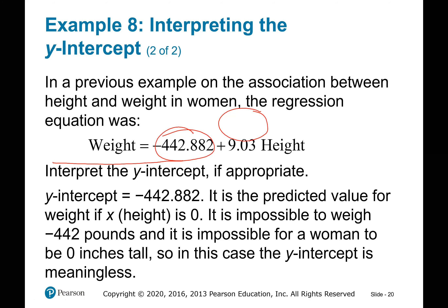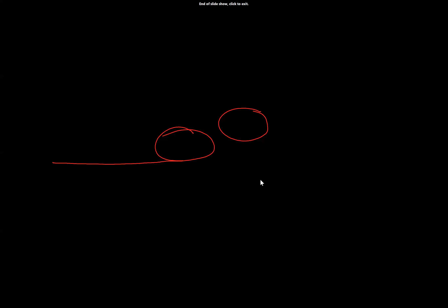For the height and weight regression equation, the y-intercept is −442.882. This would be the predicted weight if height is zero inches, but that is impossible — a person cannot weigh a negative amount, and a woman cannot be zero inches tall. So in this case, the y-intercept is meaningless. That's the end of section 4.3.